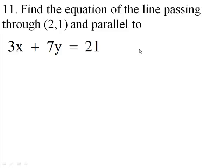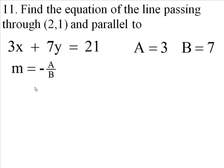Number 11. Find the equation of the line passing through the point (2, 1) and parallel to 3x plus 7y equals 21. Alright. First of all, let's find out the slope of this equation. We know that A is 3 and B is 7. The slope of the equation is going to be negative 3 over 7.